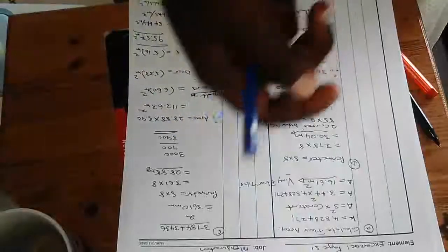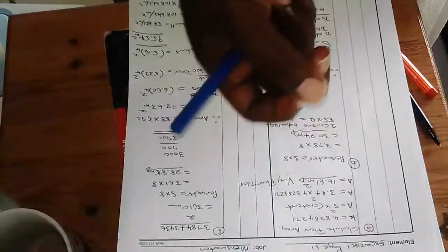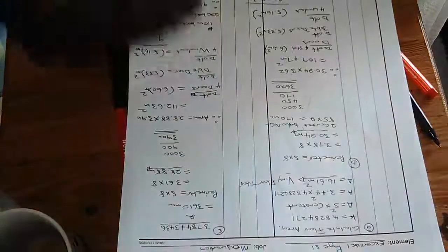After you've calculated the surface area, you need to deduct all openings, all doors, all windows. Otherwise you'll have an inflated price when you are rendering.